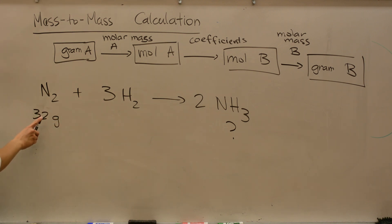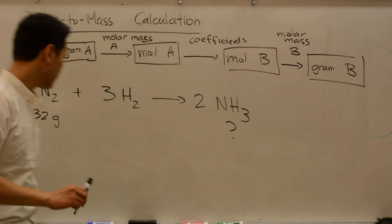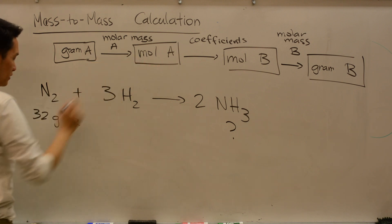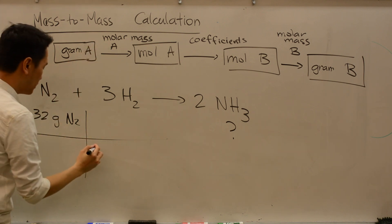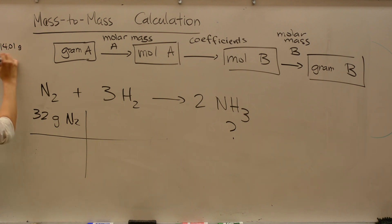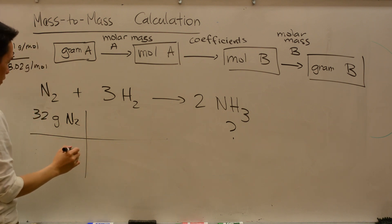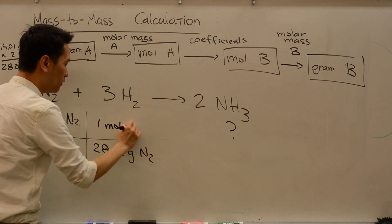Let's solve this problem: if I have 32 grams of nitrogen, how many grams of ammonia will I create? Starting with 32 grams of nitrogen, we need to go to moles of nitrogen using the molar mass of N2. The molar mass of N2: nitrogen is 14.01 grams per mole, and there are two of those, so times two — that's 28.02 grams per mole. So 28.02 grams of nitrogen is in one mole of nitrogen.